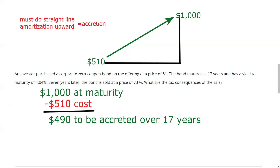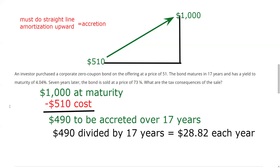490 divided by 17 years means I adjust my cost basis by $28.82 each year. By the way, it is testable to know that $28.82 each year that I'm not actually receiving is still taxable — the concept of paying taxes on money you're not actually receiving is called phantom income. I've held it for seven years, so seven times $28.82 equals $201.74. My adjusted cost basis after seven years is $711.74 — that's $201.74 plus the original $510.